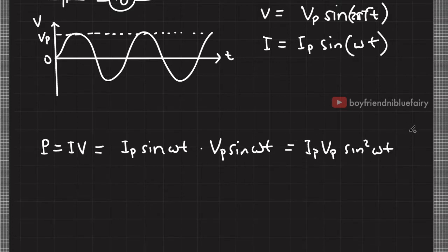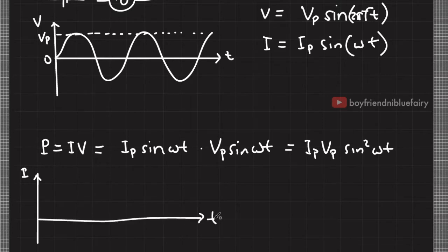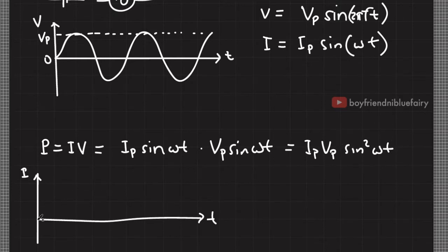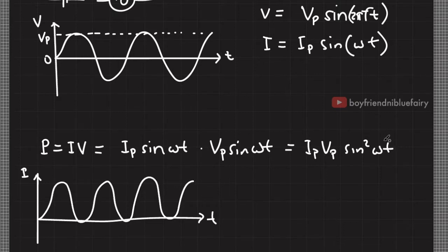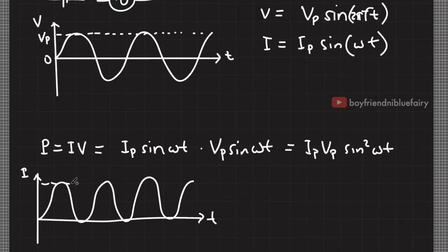If I try to plot this expression, where the y-axis refers to power input in the device and the x-axis refers to time, since this is a sine squared function it will always be positive, and the plot would look like this. The maximum value of the sine function is 1, and during that time we retrieve the maximum power input, which is I sub P times V sub P — the peak power. Based on this figure, the average power input would be at 1 half of this level, equal to 1 half of the maximum power input.